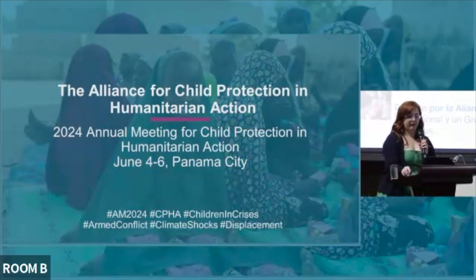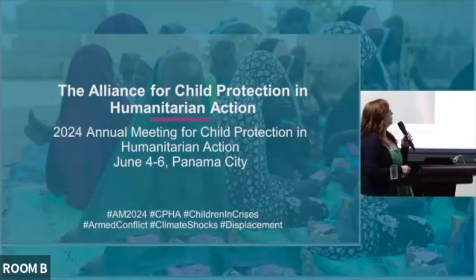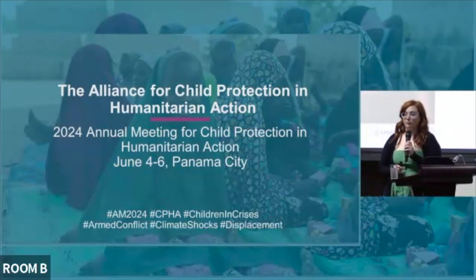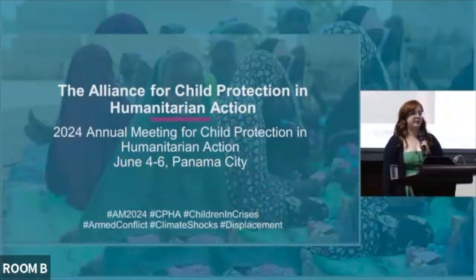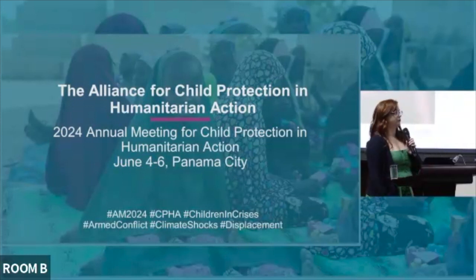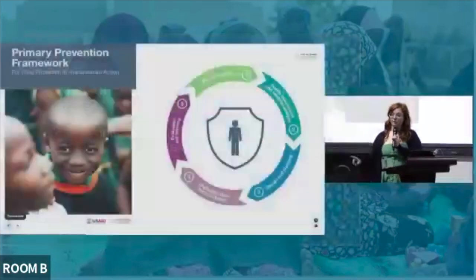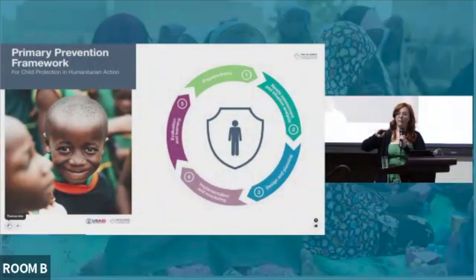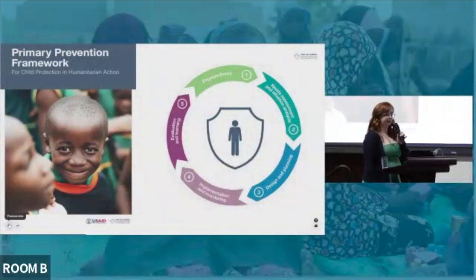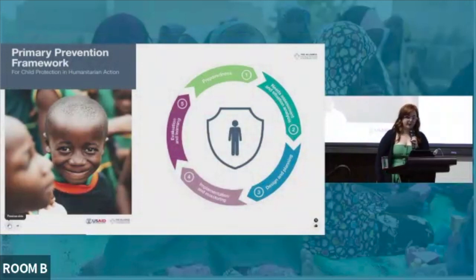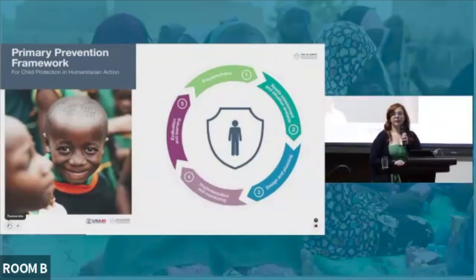The key resource developed by the Prevention Initiative is the Primary Prevention Framework for Child Protection in Humanitarian Action. This framework — which I'll refer to as 'the framework' — provides guidance for humanitarian workers on the key actions and considerations when developing or implementing programming to prevent harm to children at the population level. It is organized according to the program management cycle, giving key steps at the preparedness phase, the needs assessment and situation analysis phase, and on through the learning and evaluation phase. It also links to additional supporting resources and tools.